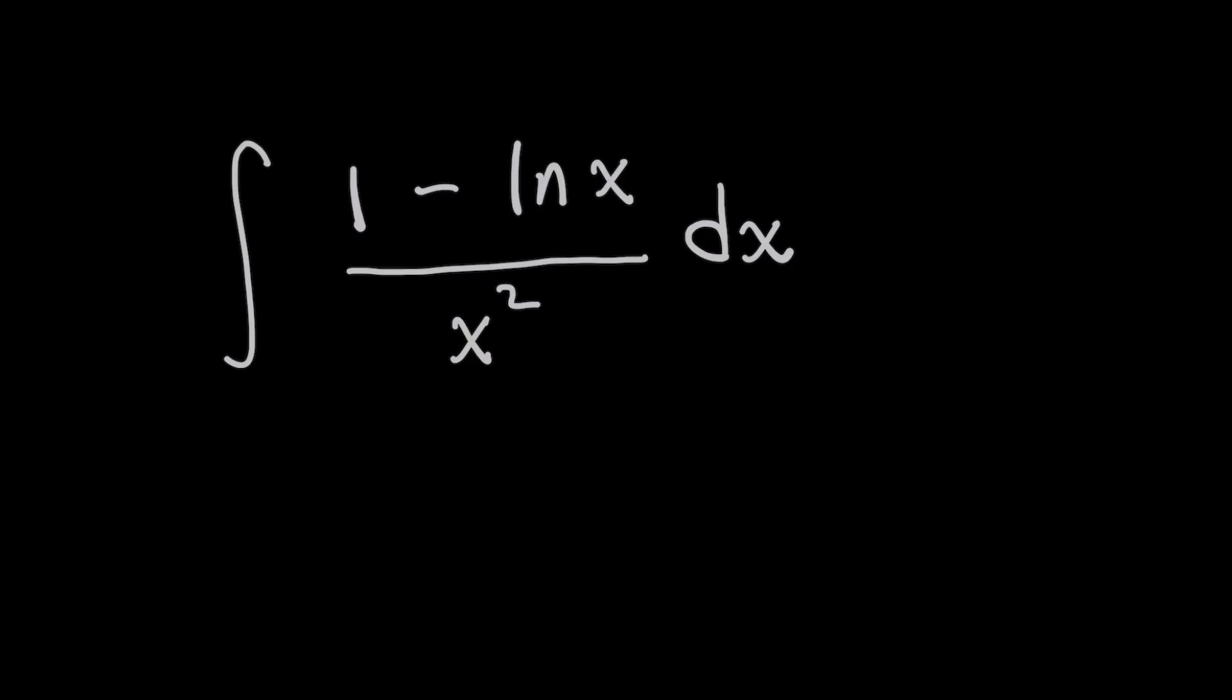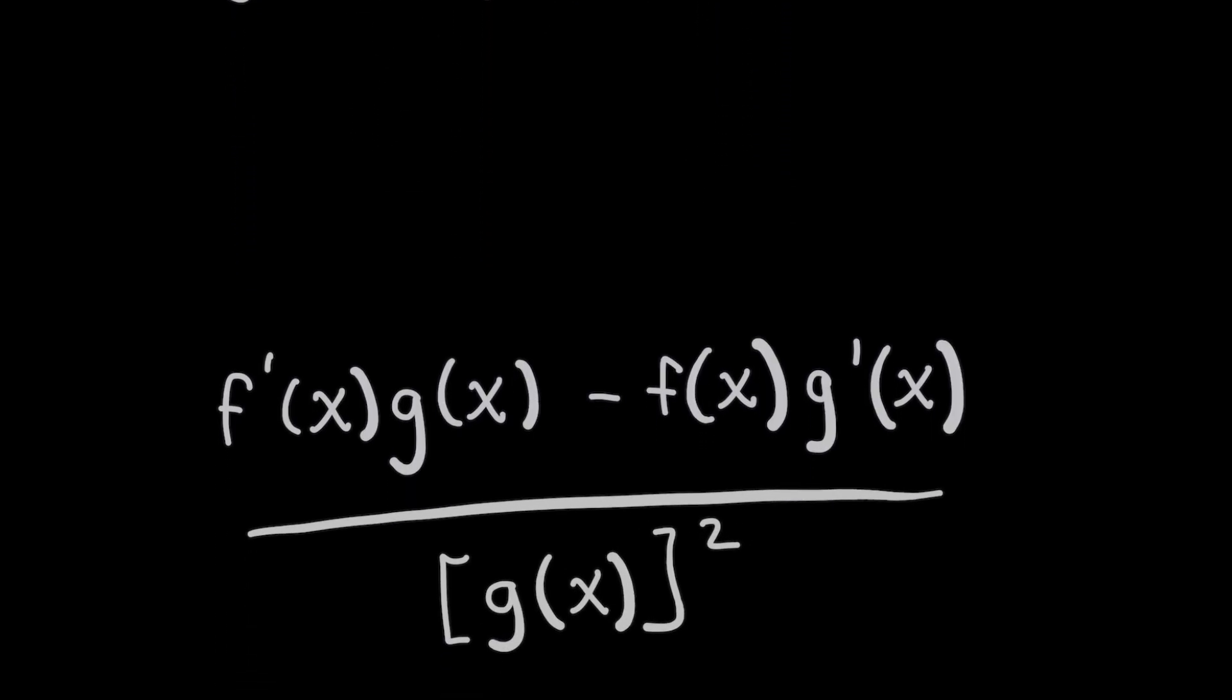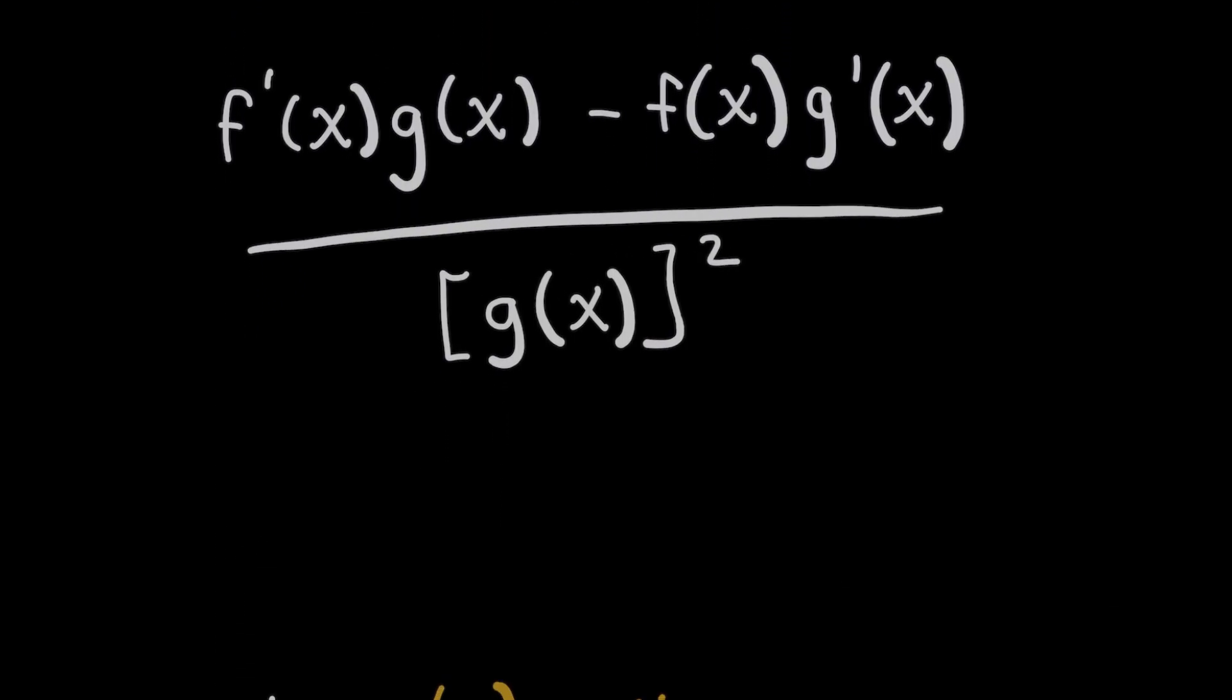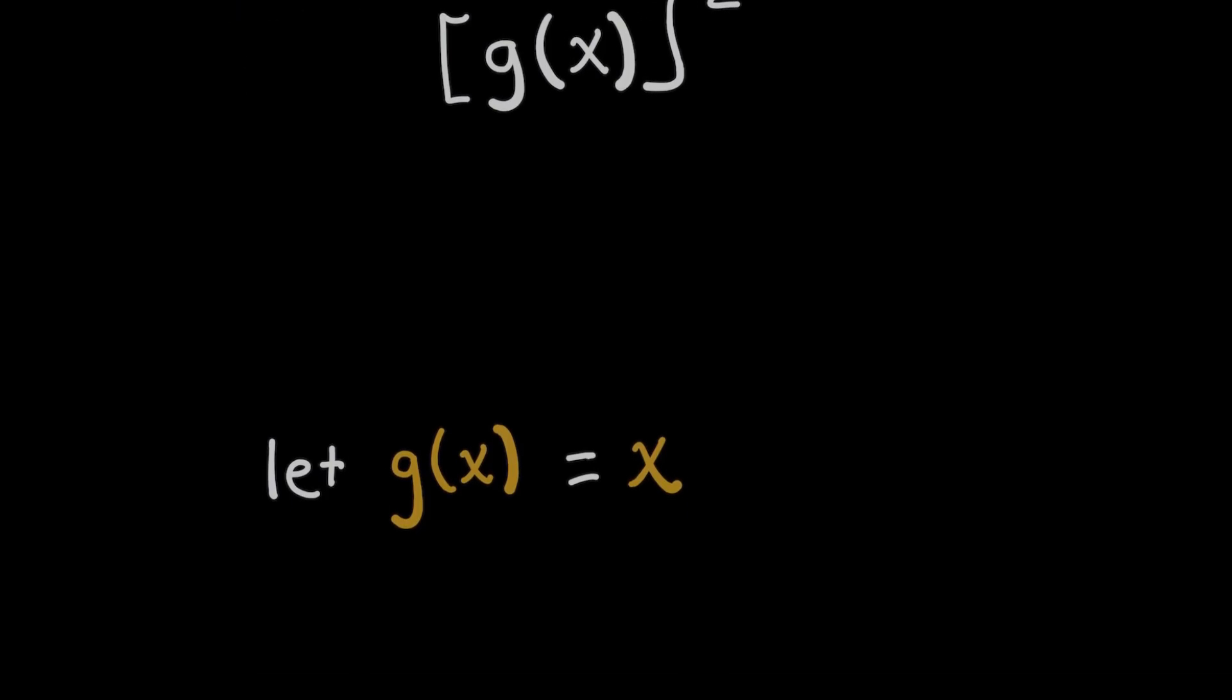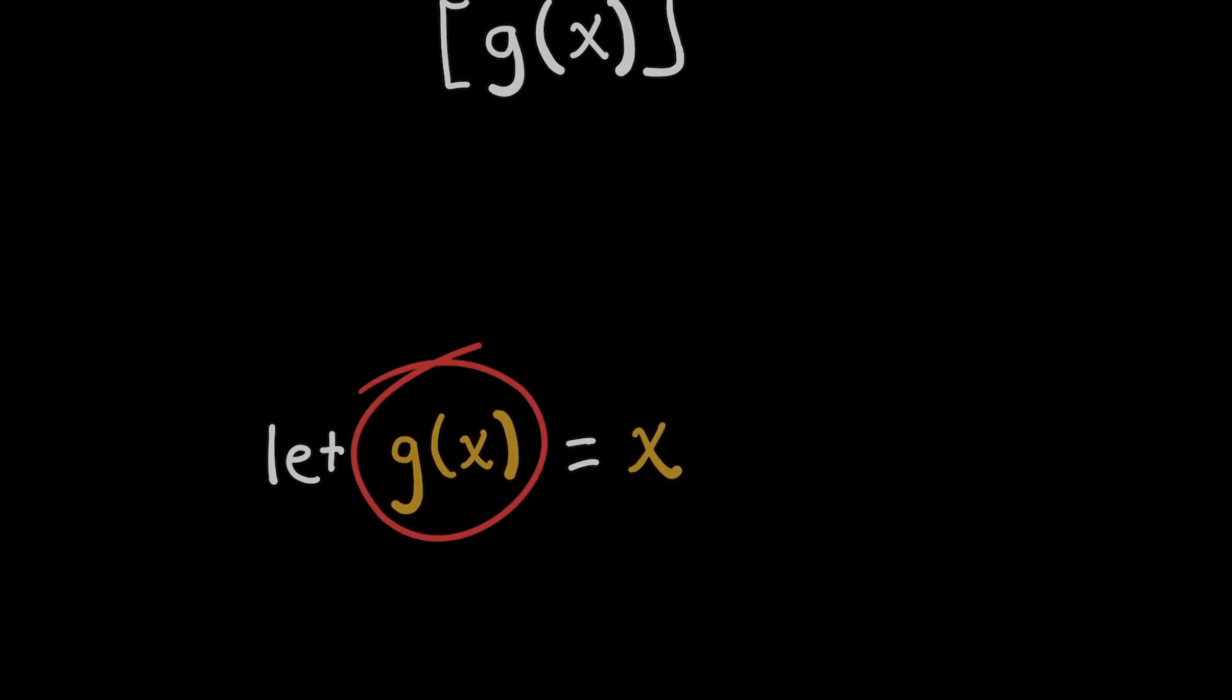So if g of x squared must be x squared, that must mean that g of x is either x or negative x. And I'm going to go ahead and choose x. And what I want to do here is now that I know what g of x is, let's go ahead and plug it into the formula for the quotient rule.